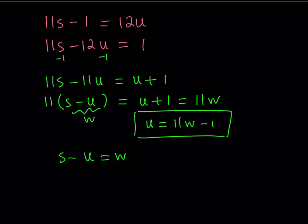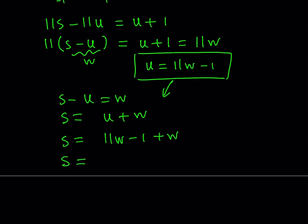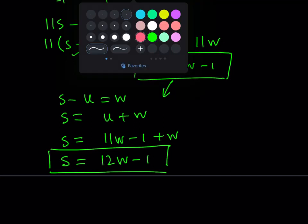That allows me to express u as 11w minus 1, which is kind of like a parametric solution. In other words, when the values of w change, the values of u are also going to be changing. I got my solution for u, but also remember that s minus u is equal to w, and we know that u is equal to 11w. So in other words, s is equal to u plus w. I can now replace u with 11w minus 1 from here, and that should give me the value of s in terms of w, because 11w plus w is 12w minus 1. Now we were able to get u and s in terms of another variable, which is basically a parametric solution for this linear Diophantine equation.